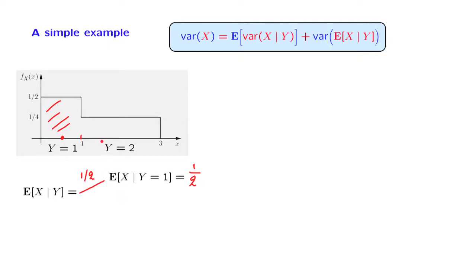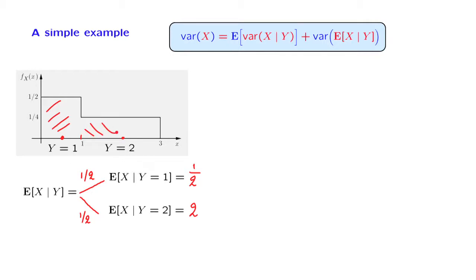The alternative scenario is that Y happens to take the value of 2, in which case X lives in this interval. Given that X has fallen in this interval, the conditional expectation of X is the midpoint of this interval, which is at 2. And this is an event that happens with probability 1/2, because the area under the PDF in this region is equal to 1/2.